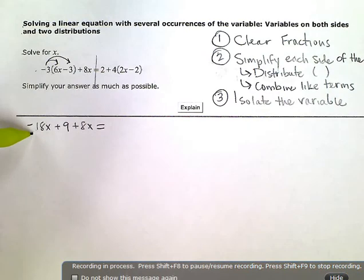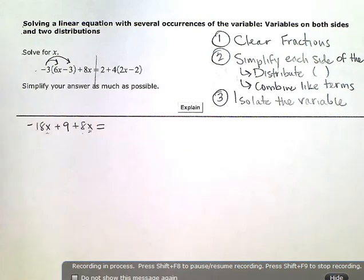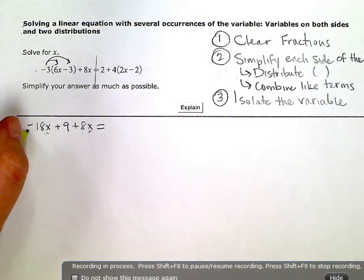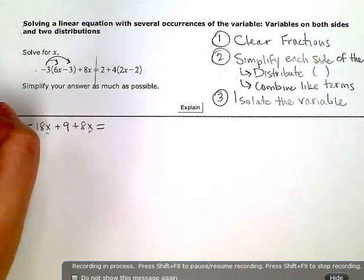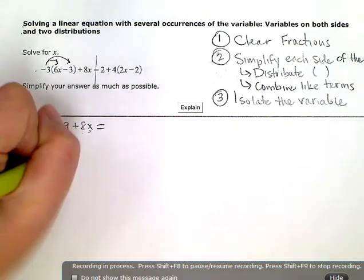Negative 18 plus 8 is negative 10x, and then I have my constant term, the nine. Now let's go to the other side. Same thing.